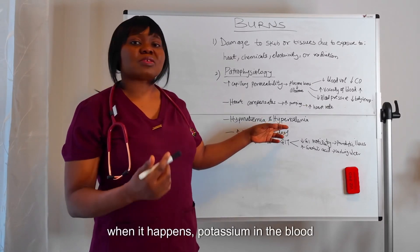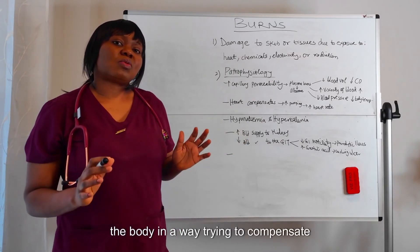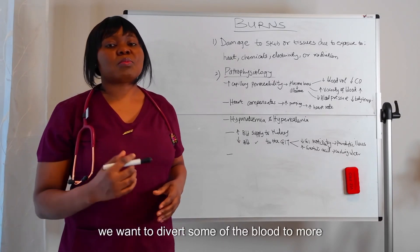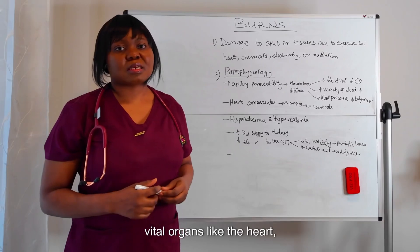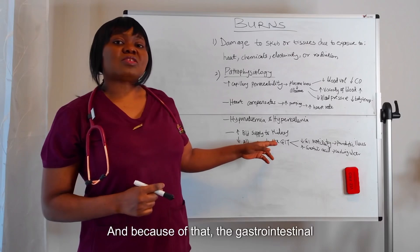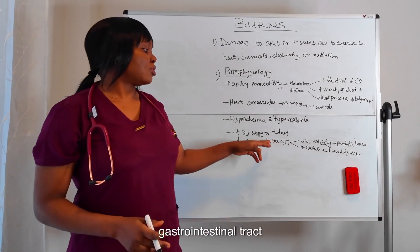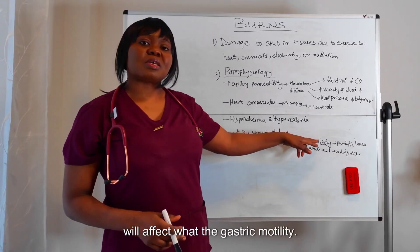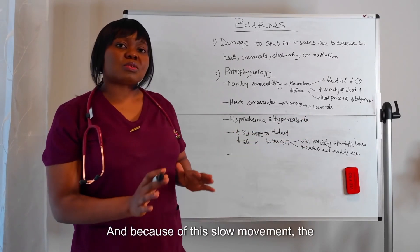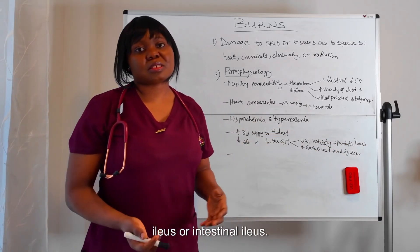Another thing that may happen is that the body, in a way trying to compensate itself — since the blood volume is low — will divert some of the blood to more vital organs like the heart, the brain, and the liver. Because of that, the gastrointestinal tract may suffer low blood volume. Decreasing blood volume to the gastrointestinal tract will affect gastric motility. The gastrointestinal motility will be low, and because of this slow movement, the intestine may suffer what we call paralytic ileus or intestinal ileus.